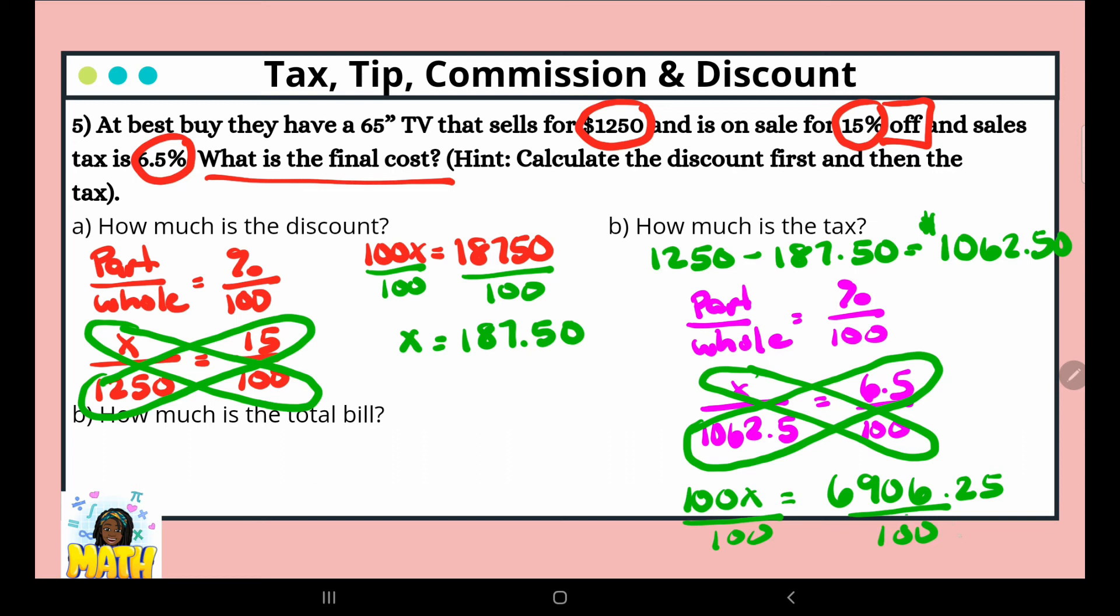So we move that decimal two places, and that's going to give us 69.0625. So x equals 69.0625. And because we're dealing with money, we need to round. So we round to the hundredths place where the six is, the number after it is a two. So this would just equal $69.06. So that's the total amount of the tax.